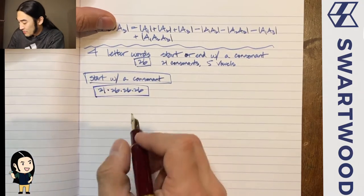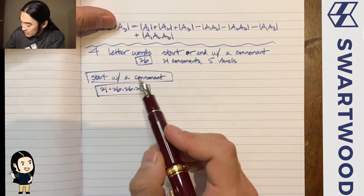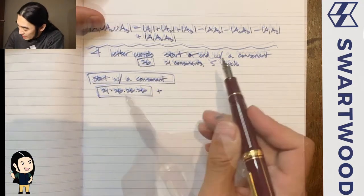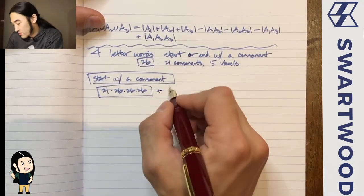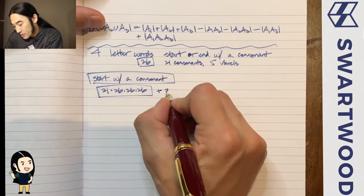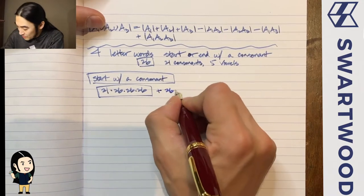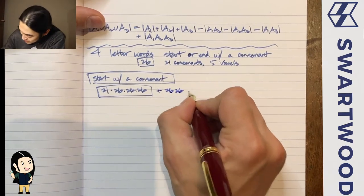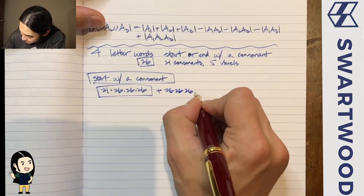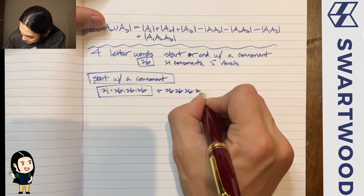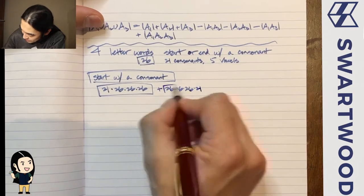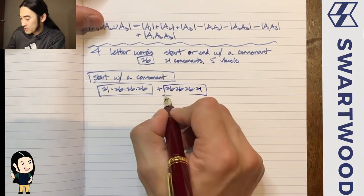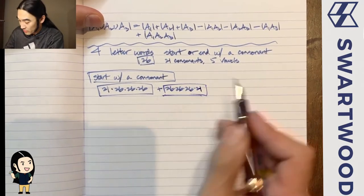But there's another way — you're also happy if the word ends with a consonant. So for the second case, anything for the first, second, and third letters, and a consonant for the fourth.